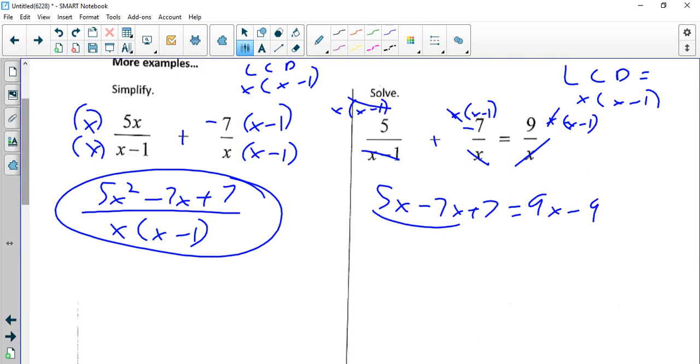First I simplify, and that's going to give me negative 2x plus 7 equals 9x minus 9. I'm going to add 2x to both sides. So I'm going to add 9 to both sides to get 16. Divide by 11. And yes, fractions are okay for answers.